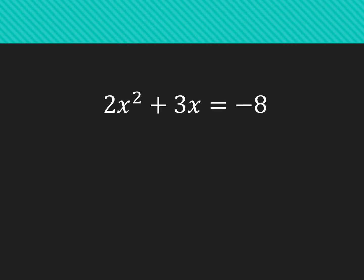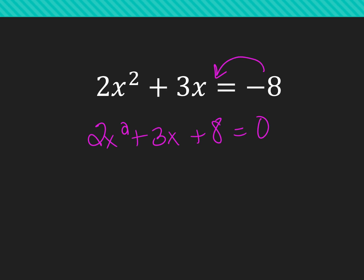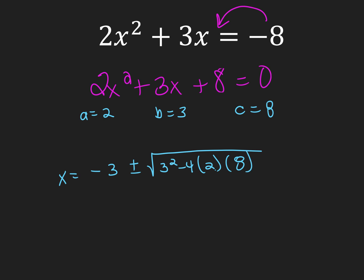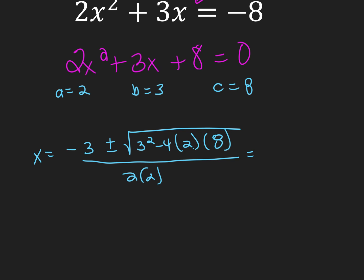And lastly, I have this quadratic. Since I have x squared and x, I'd like to move everything to one side equal to 0. So 2x squared plus 3x plus 8 equals 0. You can complete the square, but your a term is not 1 and your b term is odd, so you'll deal with fractions. Or we can use the quadratic formula. So a is 2, b is 3, and c is 8. x equals negative b — so negative 3 — plus or minus the square root of b squared, so 3 squared minus 4 times a is 2 times c is 8, all over 2 times a, which is 2 times 2. Make sure your signs are correct — this is a critical step.